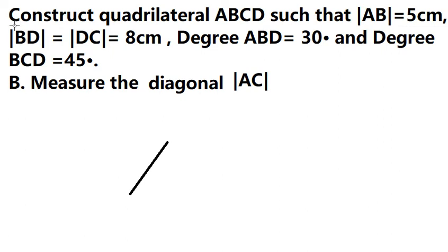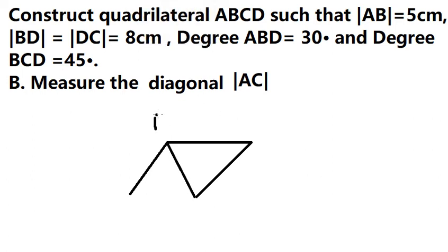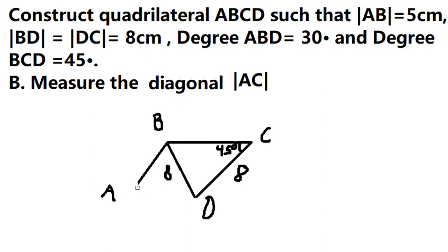We have BD, which is the diagonal of the quadrilateral. We have BCD is about 45 degrees. BC and DC — BD is 8, CD is 8, and the degrees of BCD is about 45 degrees. AB is only 5 so we need it a little bit smaller. The degrees of ABD is about 30 degrees.